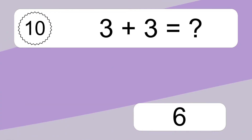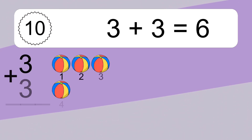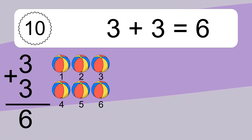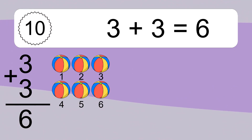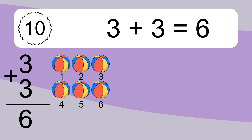3 plus 3 equals what? 3 plus 3 equals 6. Let's count it. 1, 2, 3, 4, 5, 6.